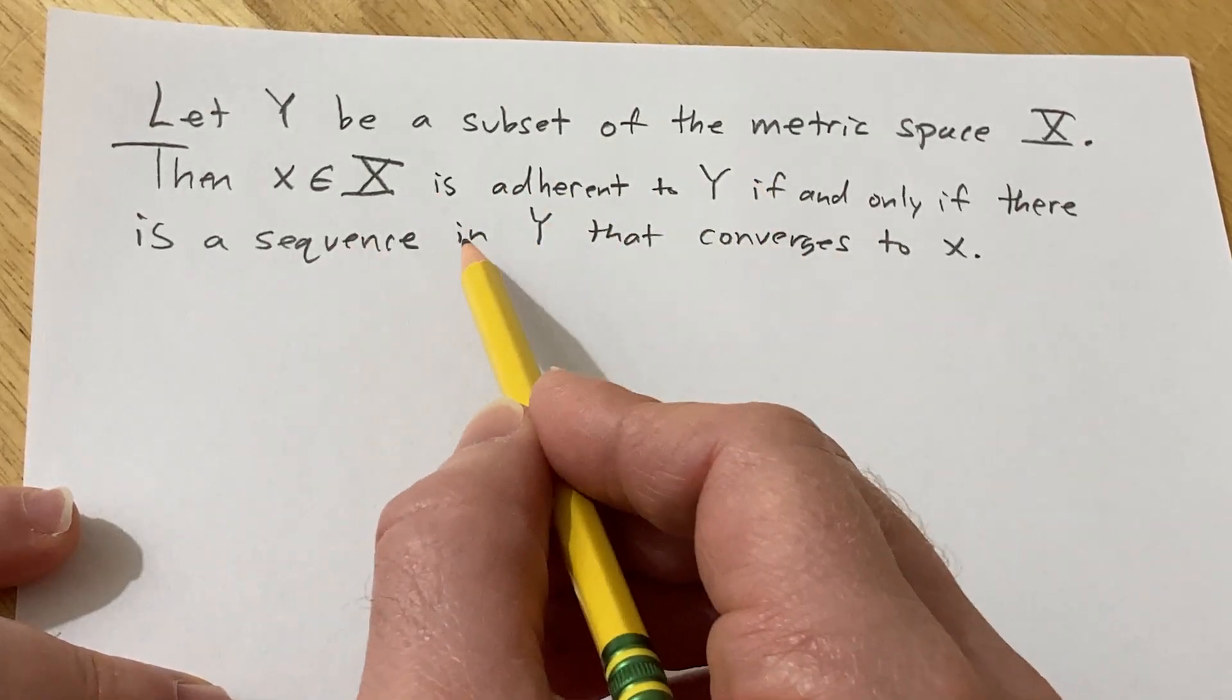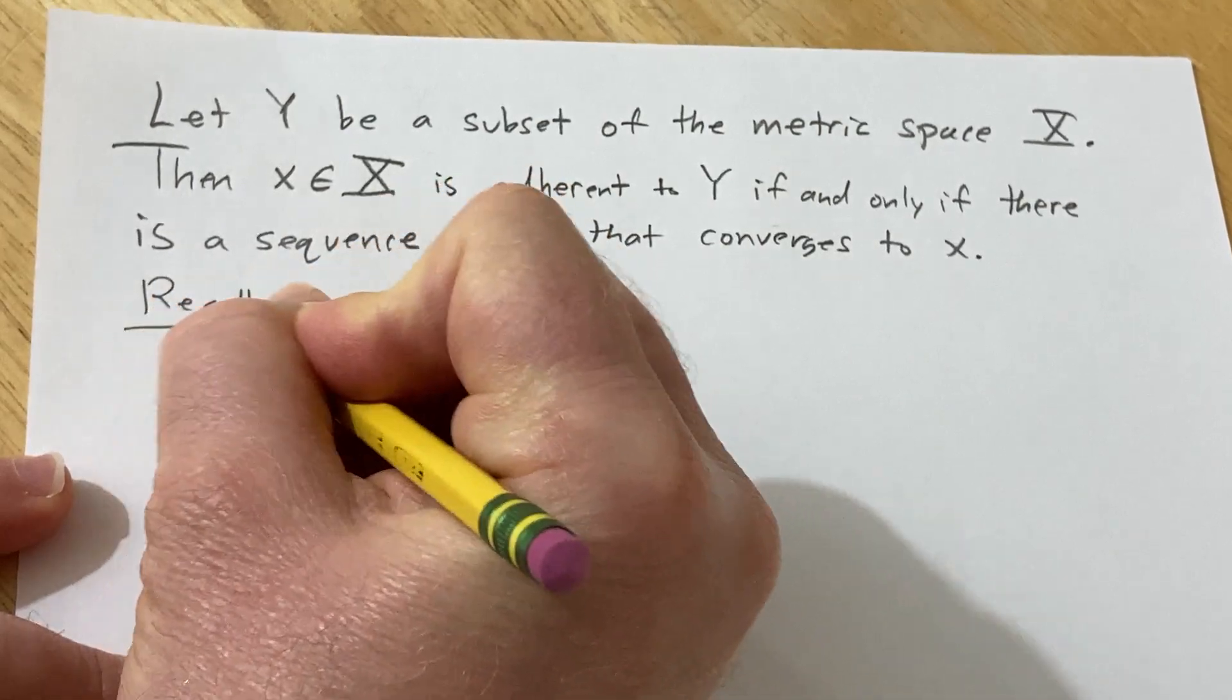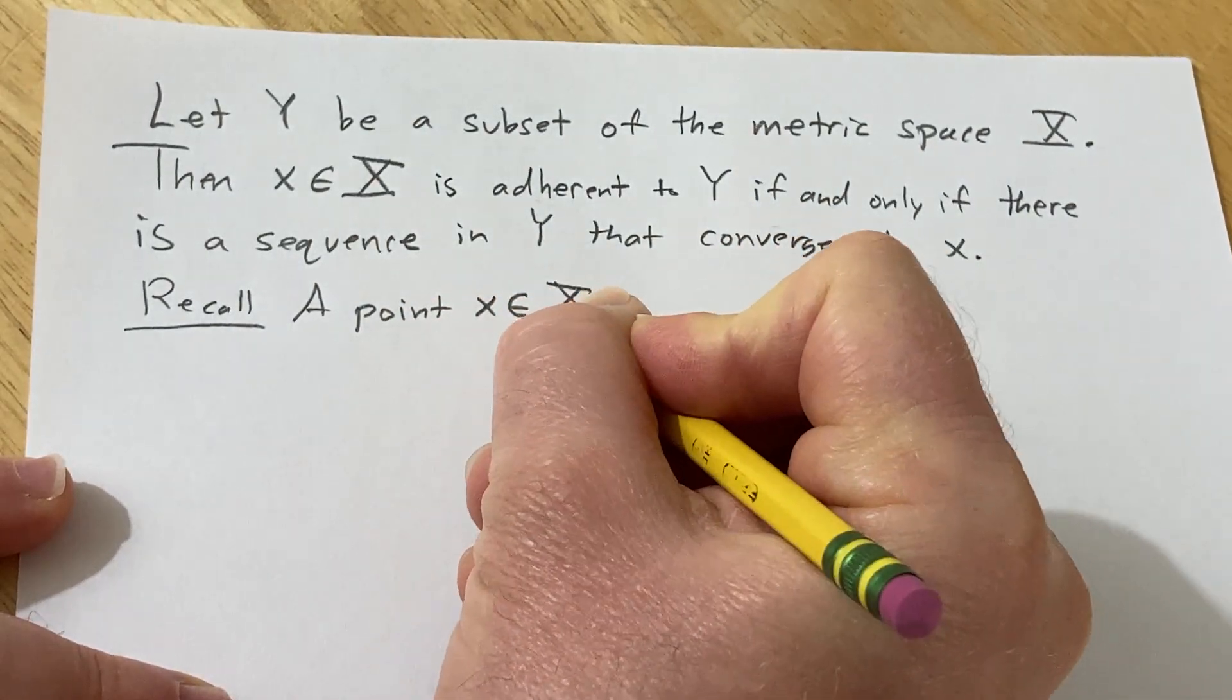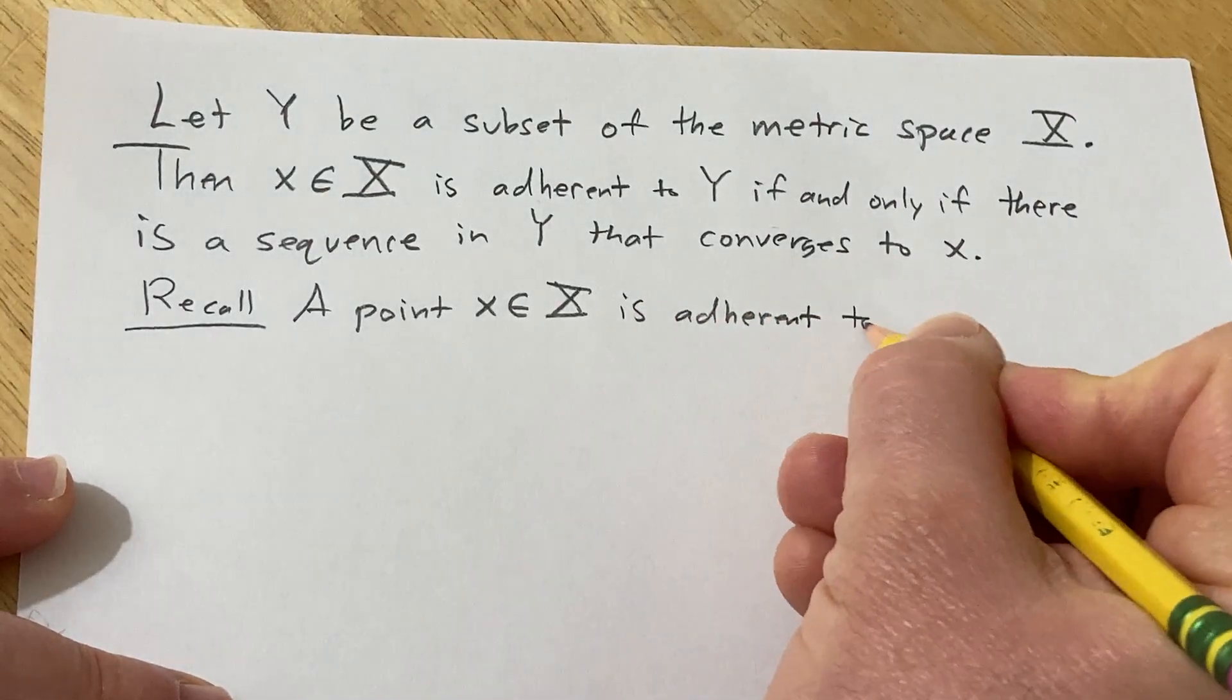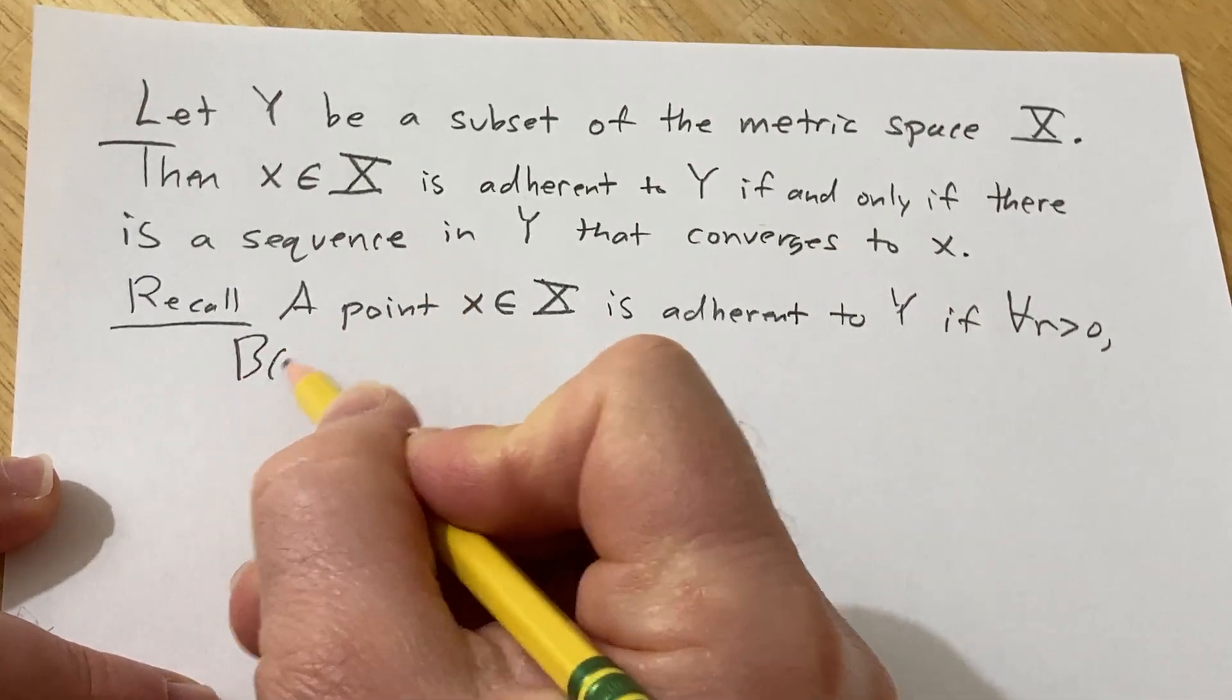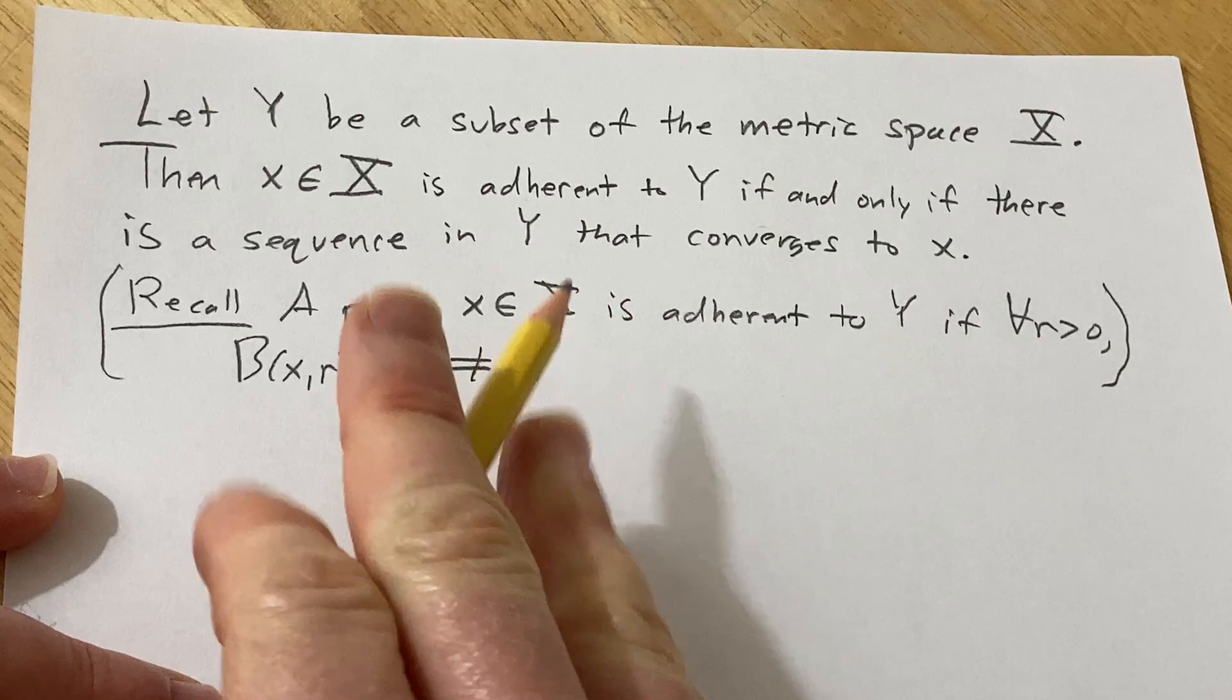So we do need a couple definitions, but the one I'm going to refresh here is adherent to Y. So recall, a point x in capital X, here capital X is a metric space, is adherent to Y if for all R greater than zero, the open ball centered at x of radius R intersected with Y is non-empty. So that's a very important definition that we need in order to go through this proof.